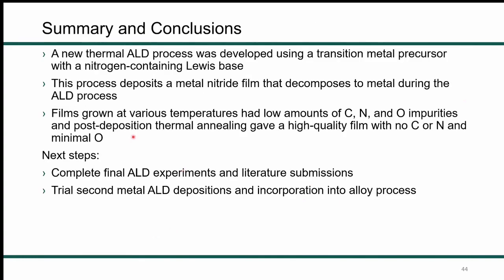To give a quick summary and conclusion: I developed a new thermal ALD process using a metal(II) precursor with a nitrogen-containing Lewis base. This deposits a metal nitride film that decomposes to metal during the ALD process. Films grown at various temperatures have low carbon, nitrogen, and oxygen impurities, with a post-deposition anneal giving a high-quality film with no carbon or nitrogen. Next steps are to complete final ALD experiments and submit a paper for publication, then develop an alloy process for the barrier film by trialing a second metal ALD deposition and incorporating it into an alloying process.